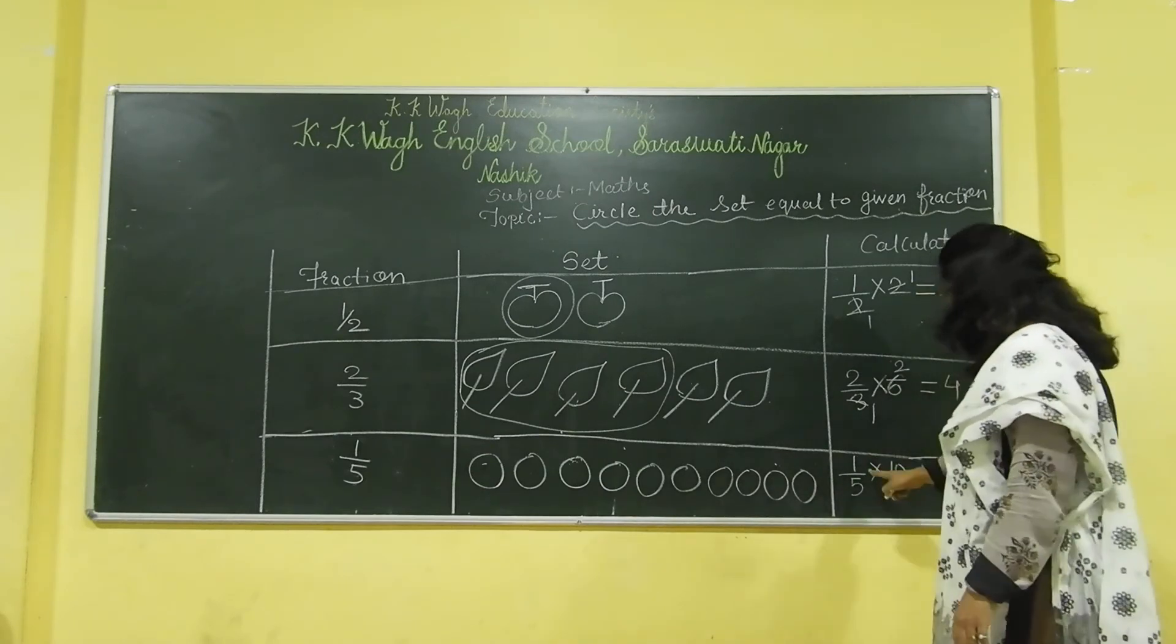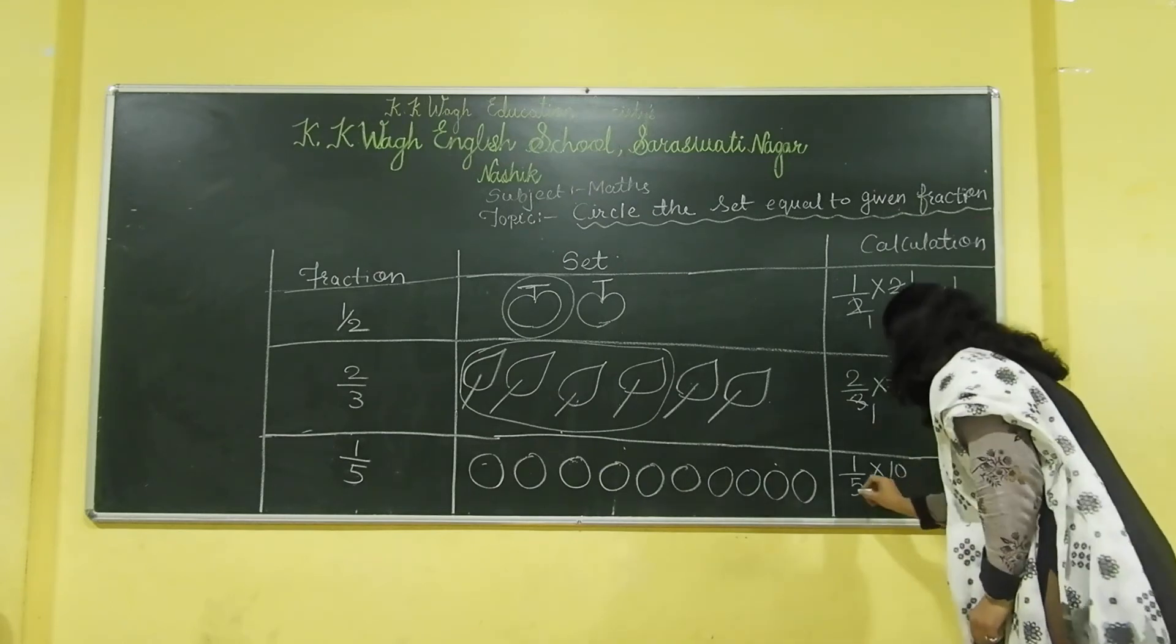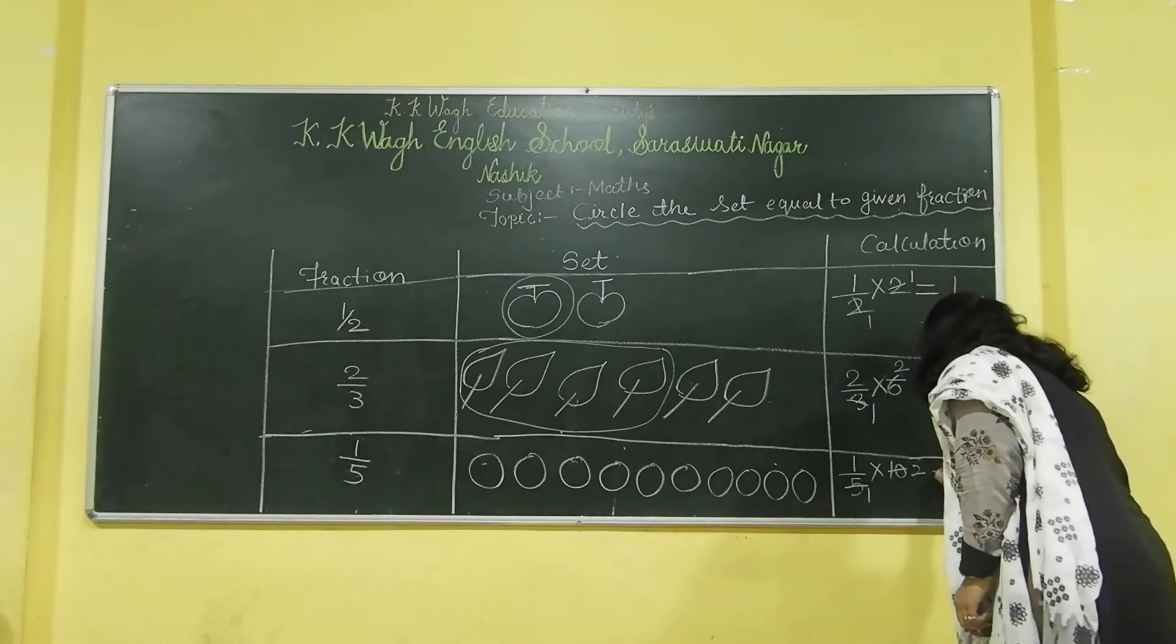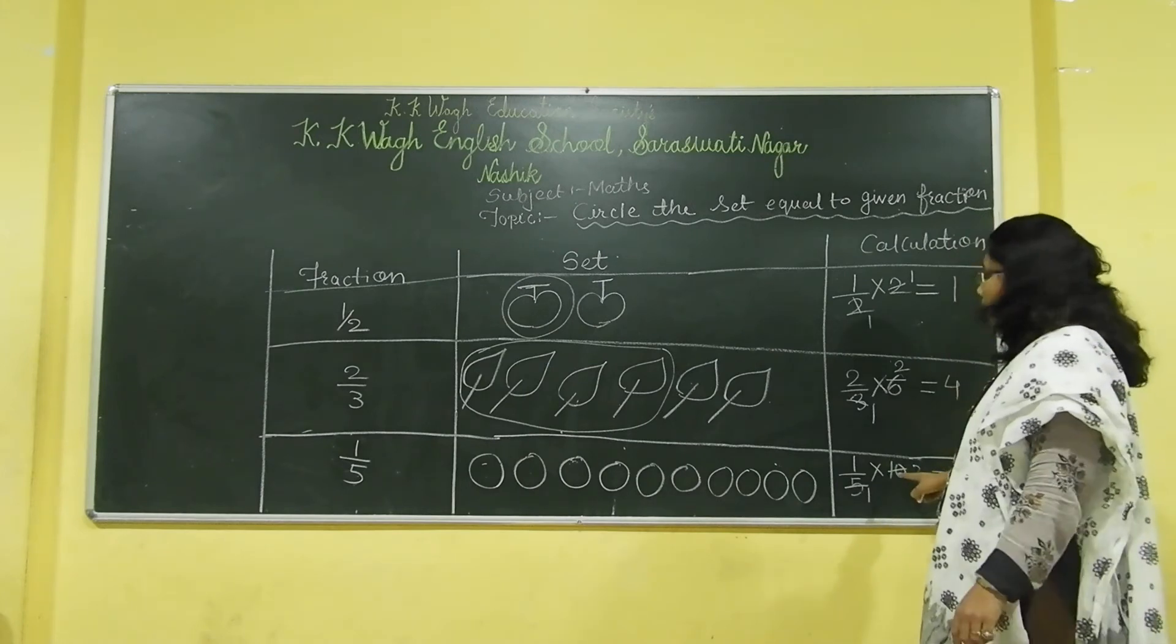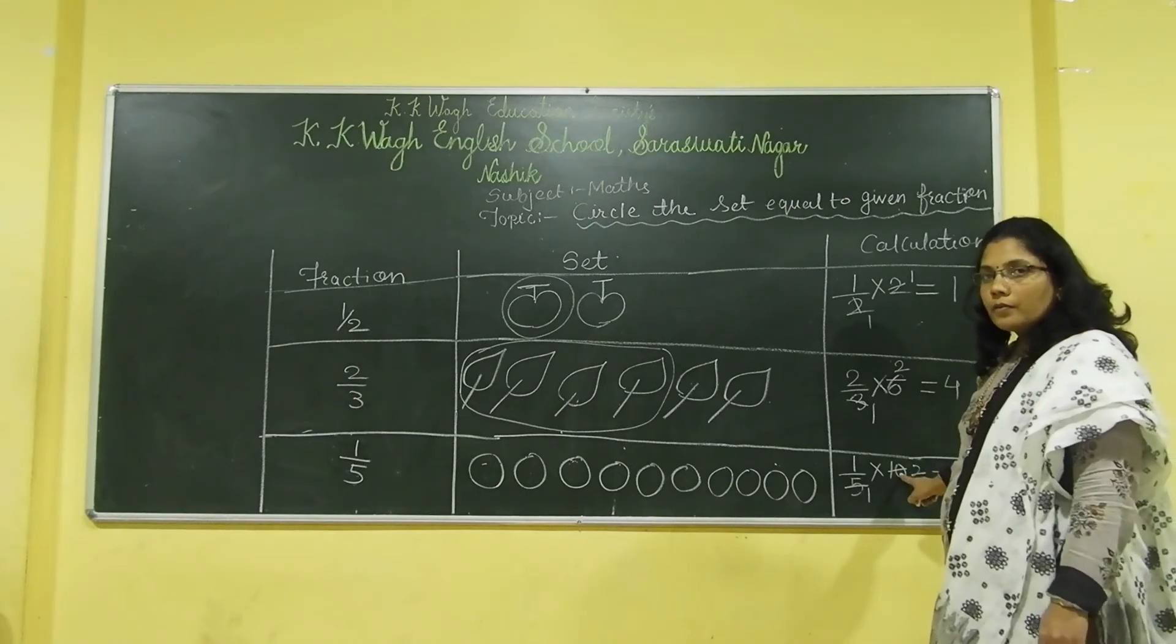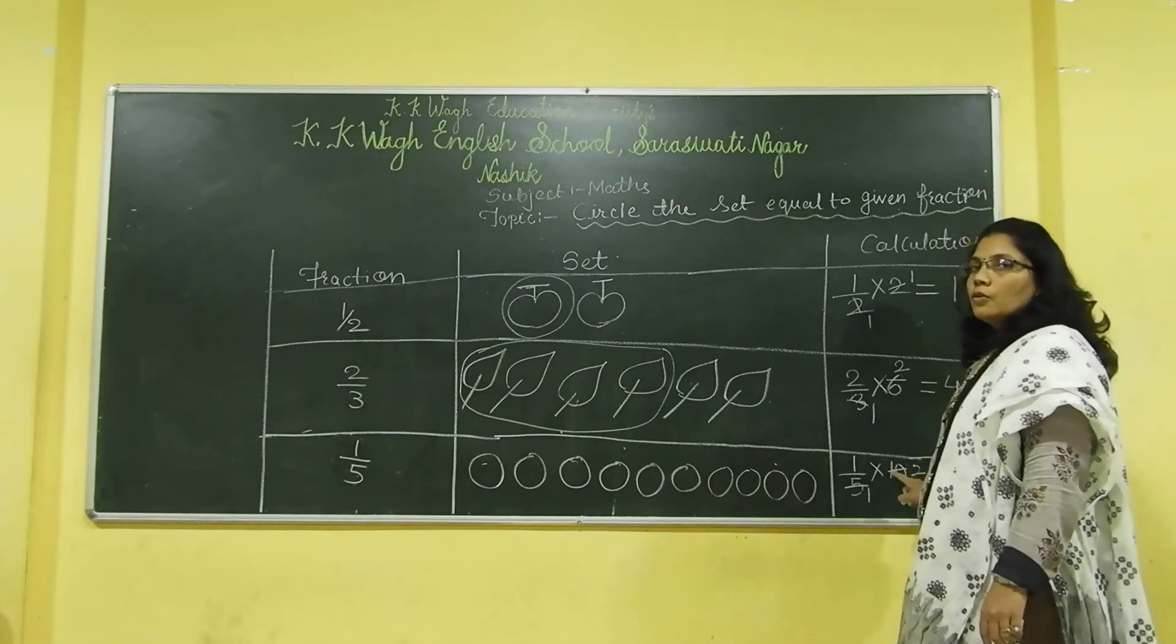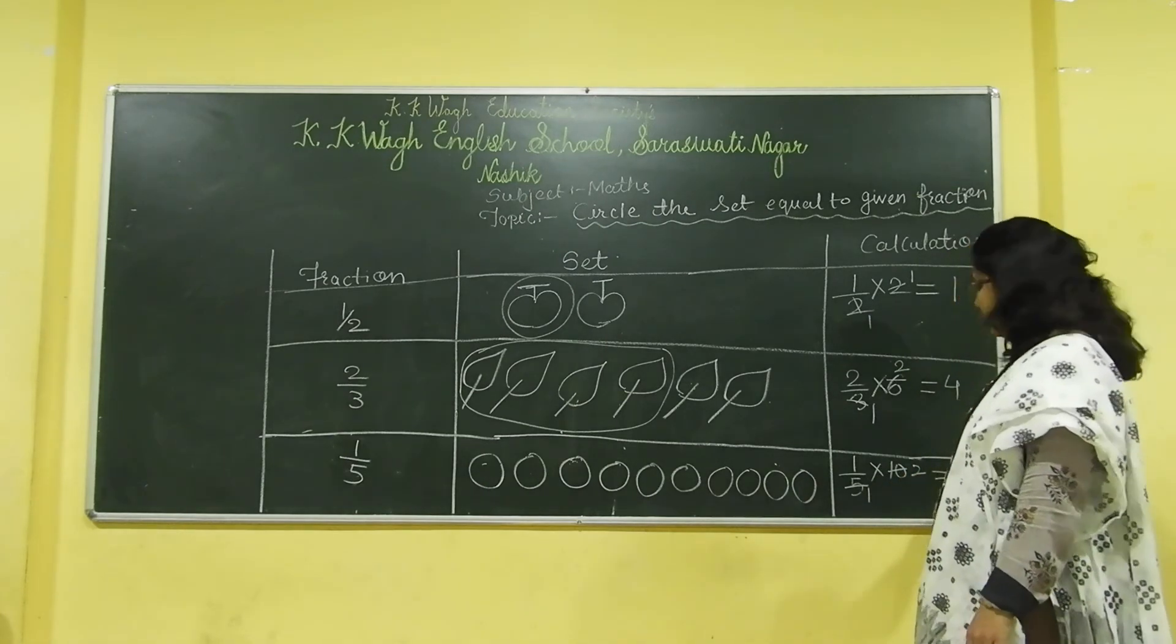Now, we will count the 5 table. 5 1s are 5, 5 2s are 10. So, 1 multiplied by 2, 1 2s are 2. We got the answer 2. Because in 5 table, 2 times 5 is 10. So, we got the answer 2 here.